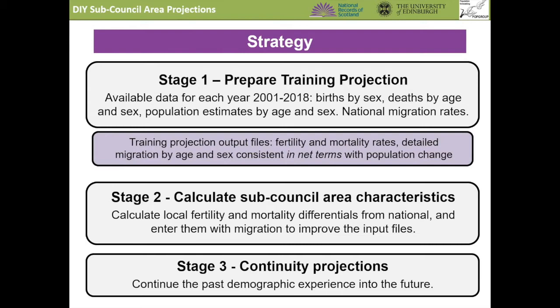In stage one, the data used will be the annual mid-year population estimates for each local area, which are available from the year 2001, and the births and deaths for each 12-month period between the mid-year population estimates. At the time of making this video, population, births and deaths are available up to 2018 throughout Britain. But when you're watching, perhaps there will be data up to 2019 or 2020 or later, if this video stands the test of time. These data are entered into Excel files as described in the guide.